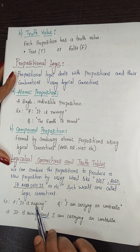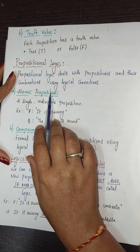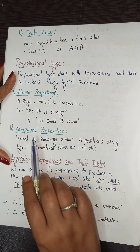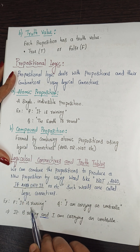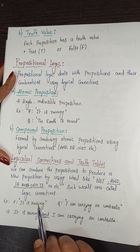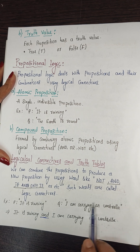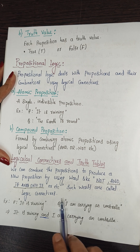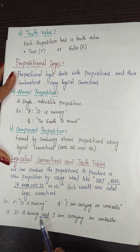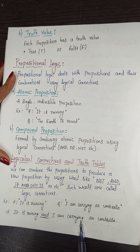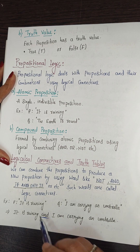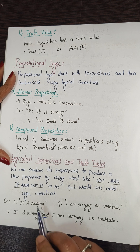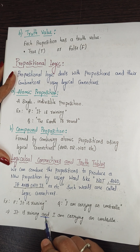For example, 'it is raining' is an atomic proposition and 'I am carrying an umbrella' is another atomic proposition. Combining these two atomic propositions, we form the compound proposition: 'It is raining and I am carrying an umbrella.' Here, 'and' is the logical connective.